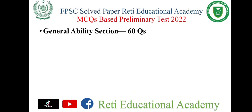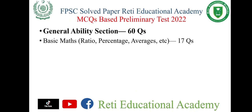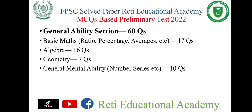You may get an idea. There will be 60 questions in the general ability section: Basic Math, Ratio, Percentage, Average etc. — 17 questions. There will be 16 questions on Algebra, 7 questions on Geometry, 10 questions for general mental ability and number series, and 10 questions regarding analytical reasoning. You will get an idea about these questions in this video. Watch the complete video and share it with your friends. Also give your feedback in the comment box.